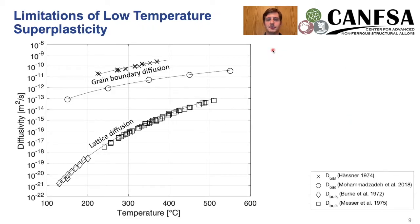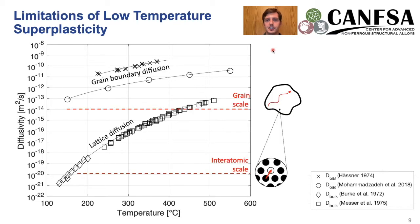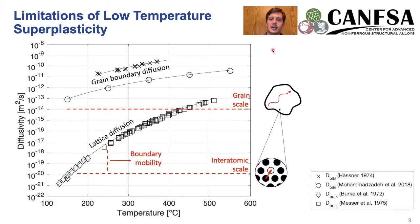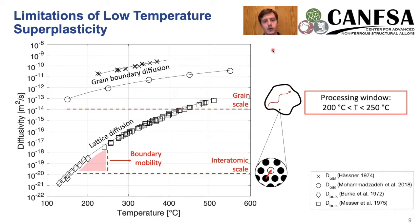This makes a lot more sense if we look at the diffusivities of aluminum in our system. There are two scales to consider: the interatomic scale, which is simply the relative movement of individual atoms, and then the scale of the entire grains themselves. This gives us a few limits on temperatures, and if we look at boundary mobility, we want to stay below 250 degrees Celsius to avoid excessive grain growth. This shows there is a very small window between 200 and 250 degrees Celsius where we have the best combination of parameters for low temperature superplasticity.